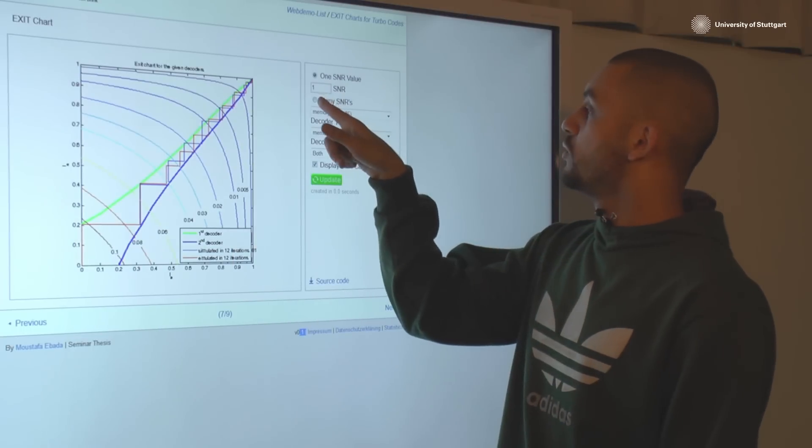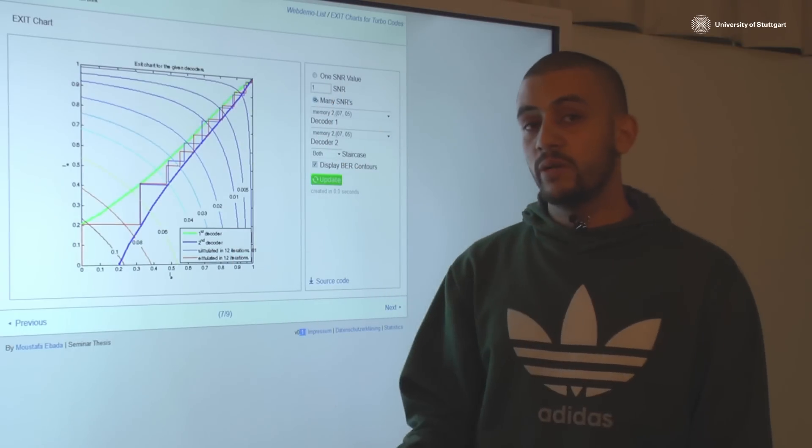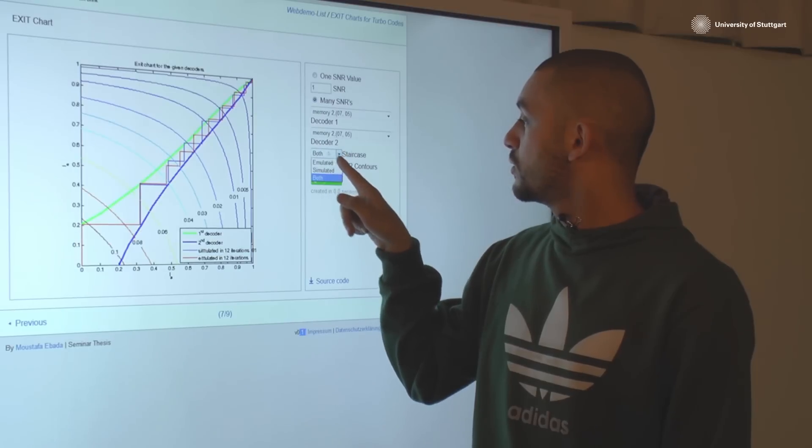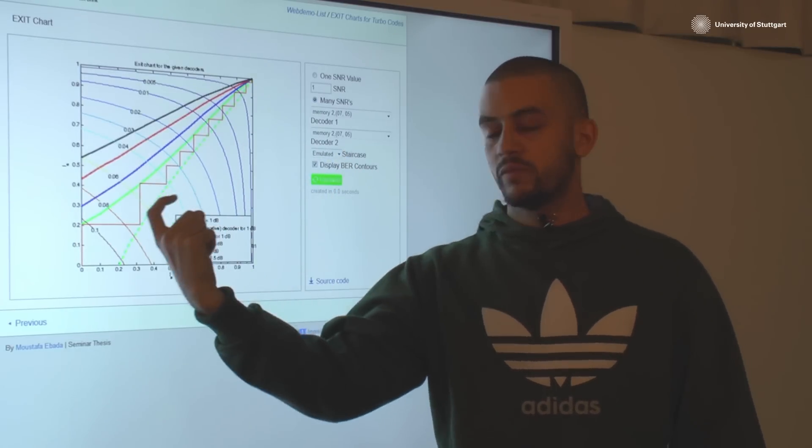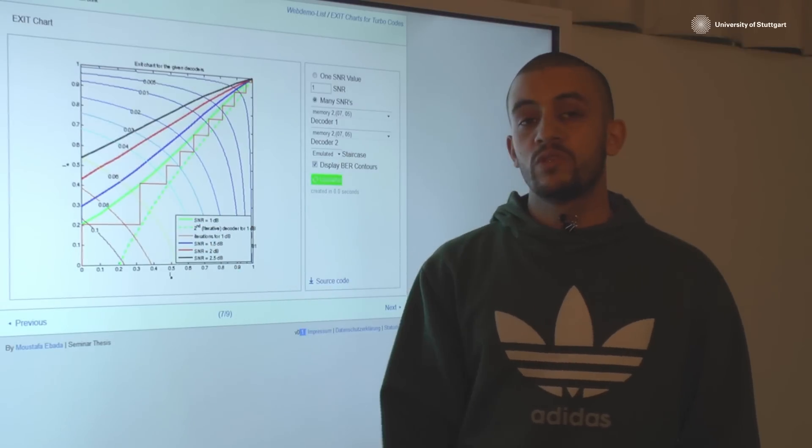One last thing here is you could view many SNRs at one time. So here, let's do this. Here you have all many SNRs and you have the least converging of them drawn, its convergence behavior.